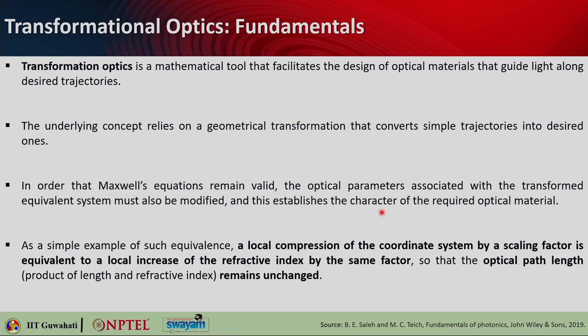The underlying concept lies on a geometrical transformation that converts simple trajectories into desired ones. As a simple example of such equivalence, a local compression of the coordinate system by a scaling factor is equivalent to a local increase in the refractive index by the same factor. If you compress a material along the Z direction by a factor of a, that has a similar effect as having the same dimensions but with refractive index n·a. The optical path length — physical length multiplied by refractive index — remains the same in both cases.